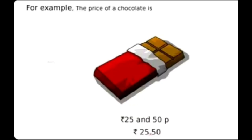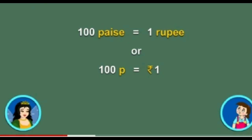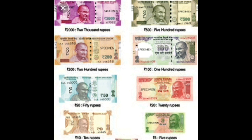Suppose you want to buy a chocolate, the price of the chocolate is 25 rupees 50 paise. How shall you write it? We shall write it as rupees 25.50 — 50 is paise. What is the relation between paise and rupee? 100 paise is equal to 1 rupee. Using symbols: 100 P is equal to ₹1.